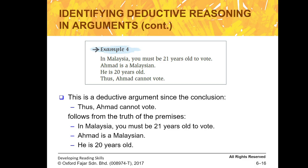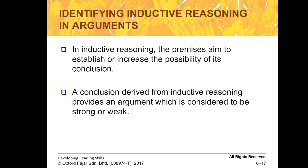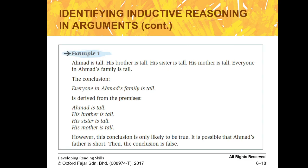Inductive reasoning, on the other hand, aims to establish or increase the possibility of its conclusion. A conclusion derived from inductive reasoning is considered strong or weak — not necessarily true. Inductive reasoning only attempts to conclude from probability, meaning it can be true or might not be. For example: 'Ahmad is tall. His brother is tall. His sister is tall. His mother is tall. Therefore, everyone in Ahmad's family is tall.'